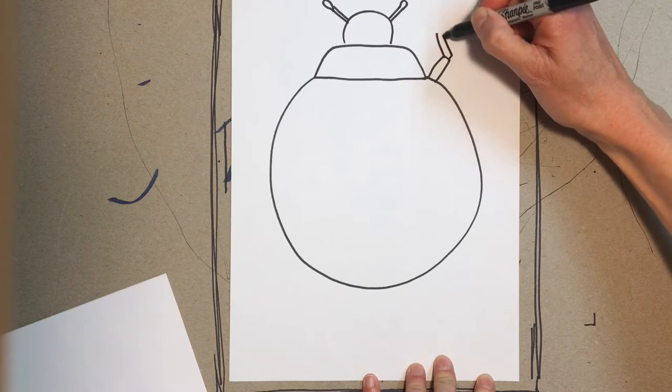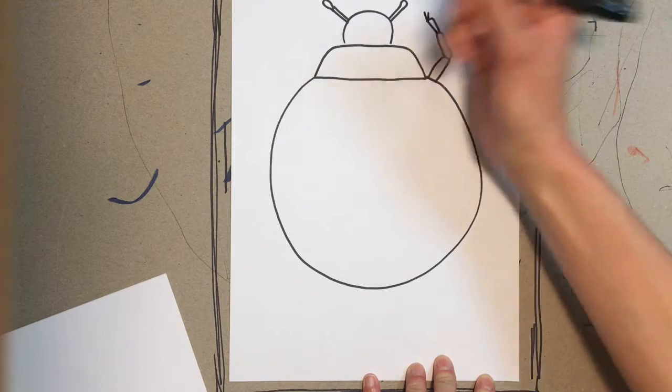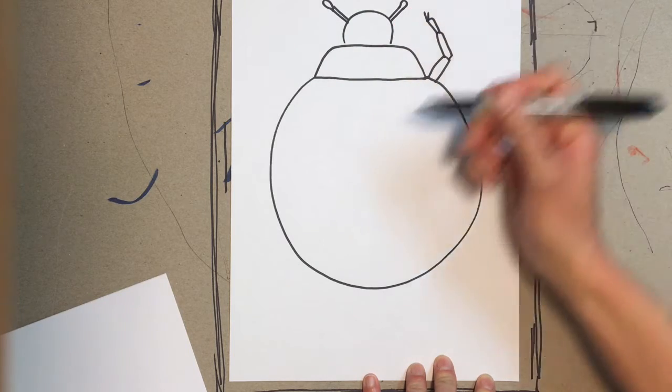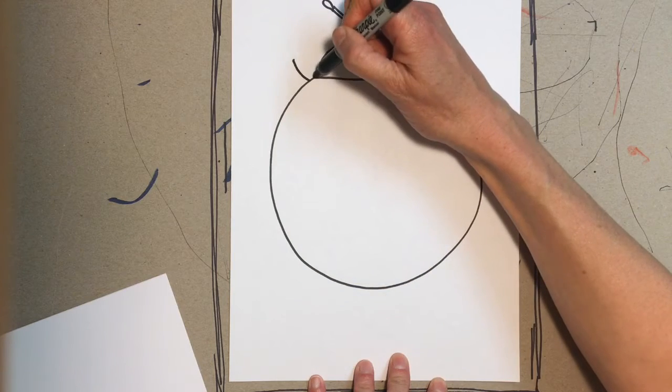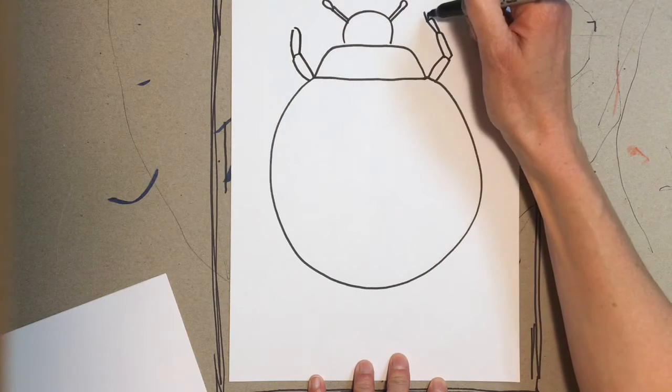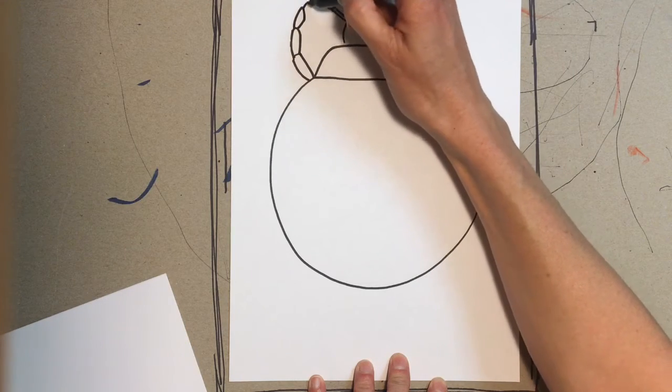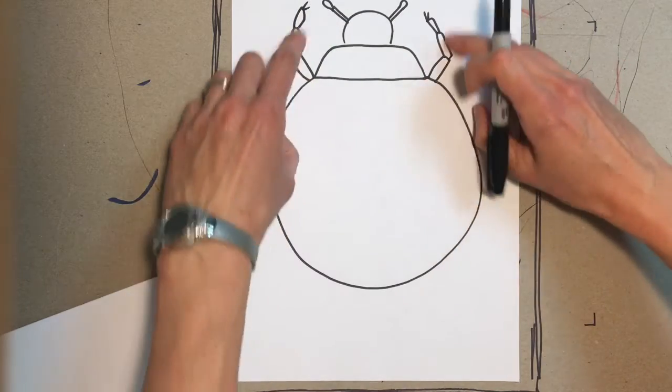...the front. If you notice when they climb up a tree they don't fall off usually because they have those little tiny grippers on their feet. So you're basically just gonna do that. You got those two arms. They have six legs so I'm gonna make my next two right about here.